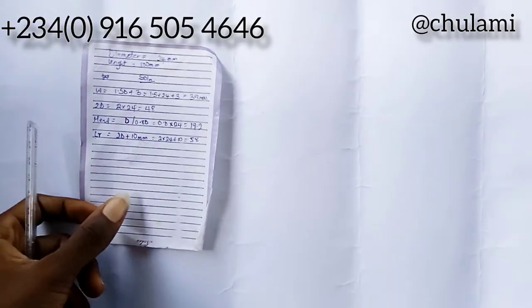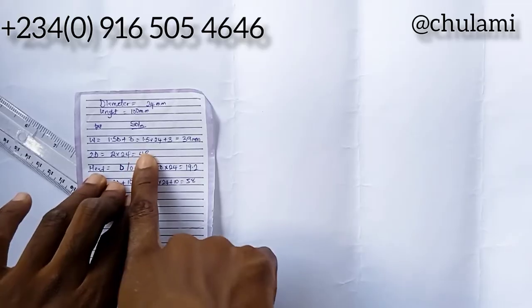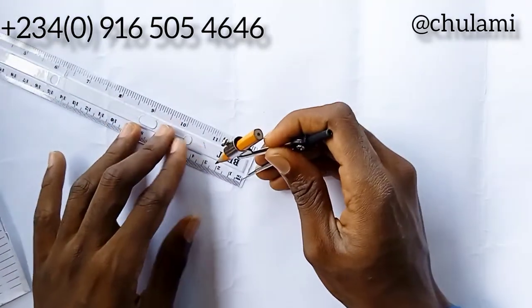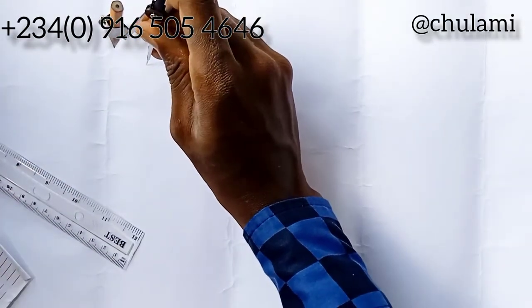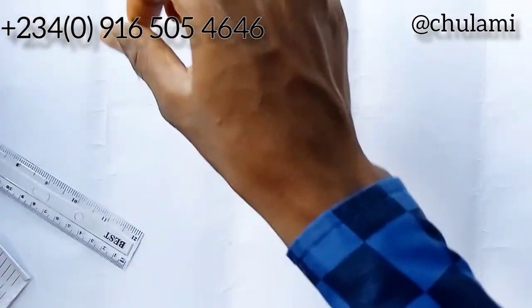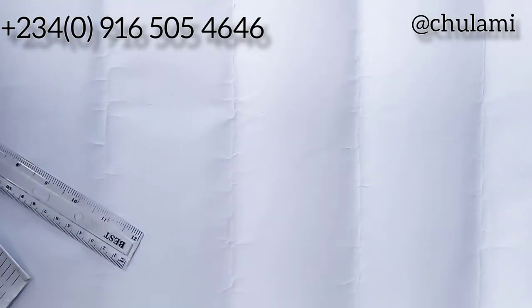The first thing we're going to draw is a circle, and the circle will be of measurement 2D, that's 48. If the diameter of circle is 48, the radius is 24. So I'm going to draw 24 and place it somewhere around this area and draw a circle. The circle has to be faint.